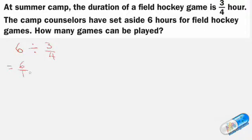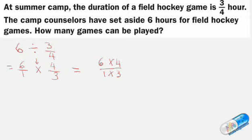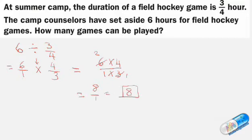To solve this, we write 6 as a fraction — 6 over 1 — then change the division to multiplication and write the reciprocal of 3 quarters. Now we multiply 6 times 4 over 1 times 3. We can cancel: 6 and 3 have a common factor of 3, so 3 divided by 3 is 1 and 6 divided by 3 is 2. That gives 2 times 4 over 1, which is 8 over 1, equal to 8. So 8 games can be played.